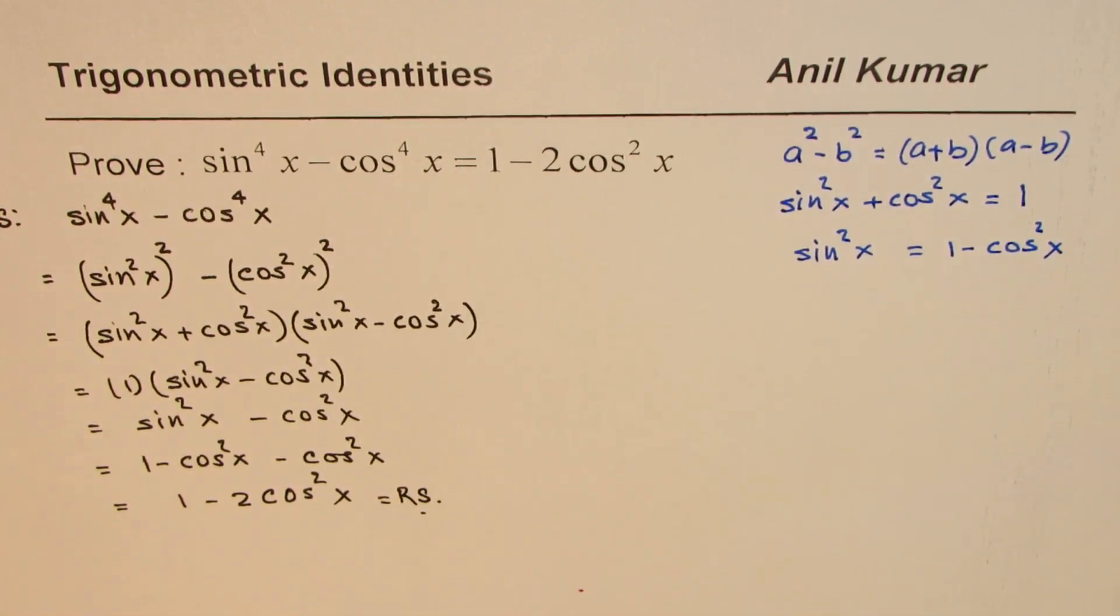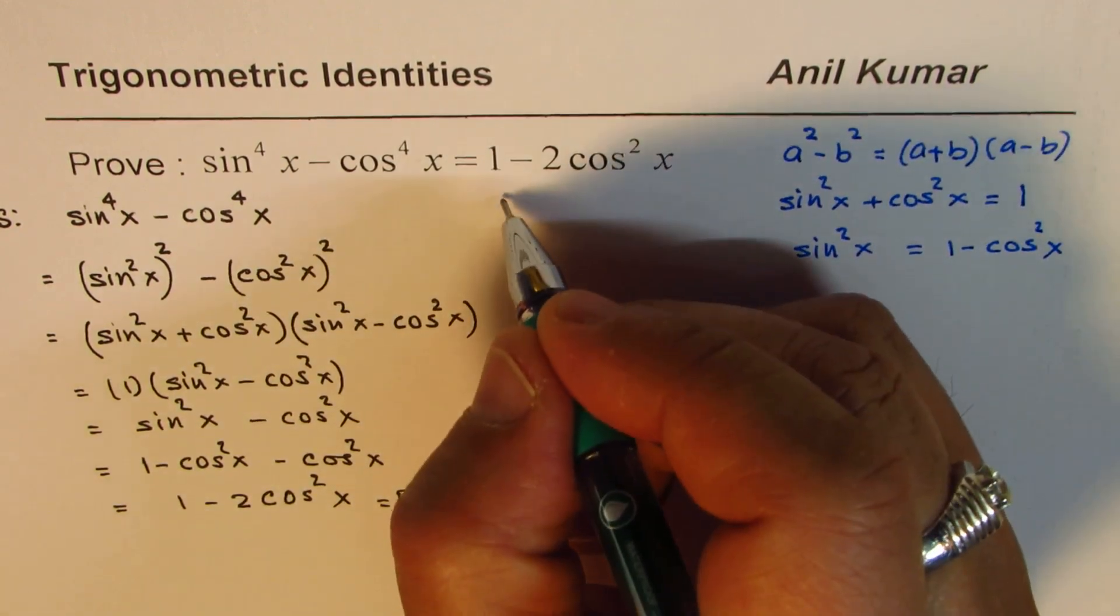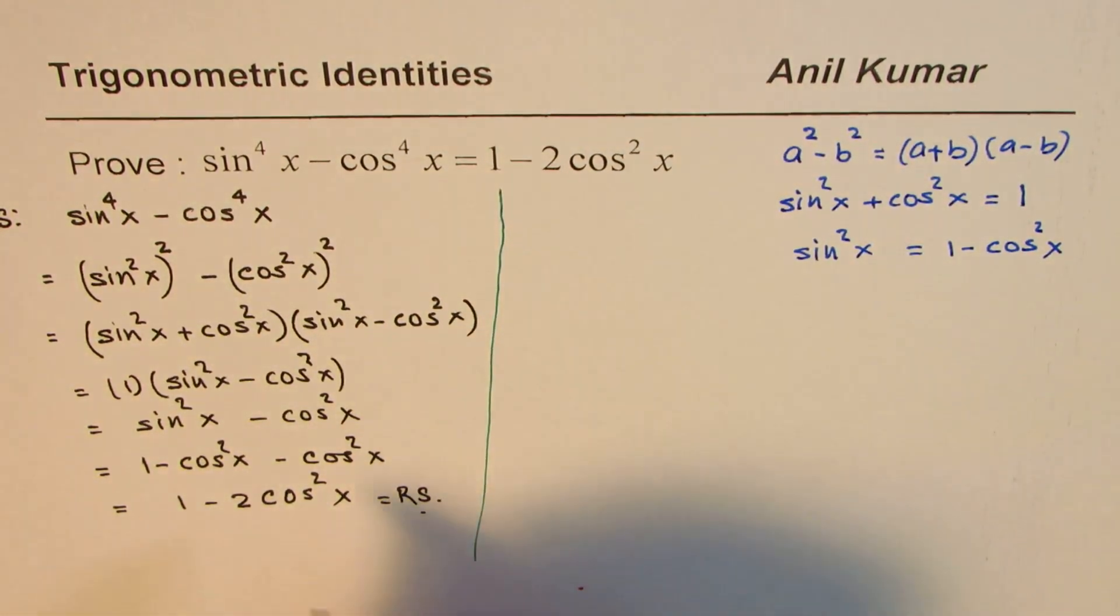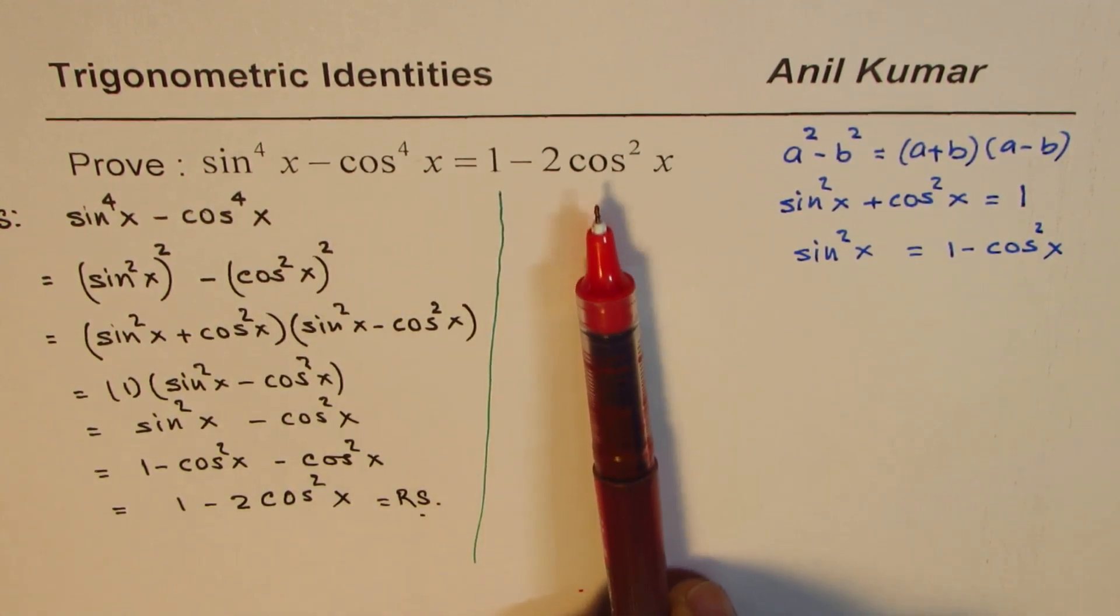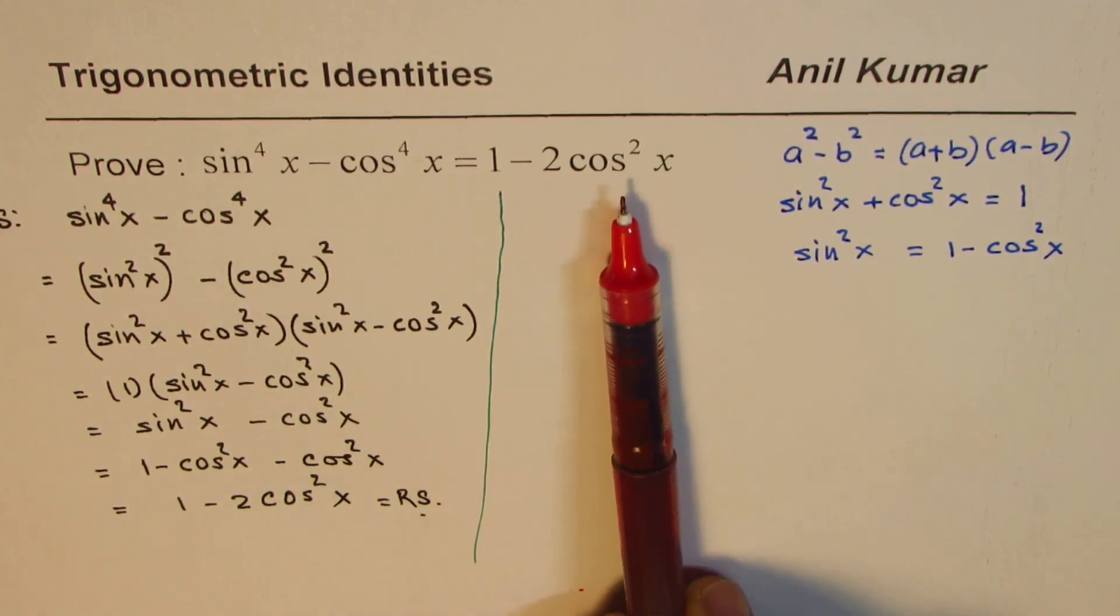So that is how you could actually solve this particular identity starting from the left side. I hope the steps are clear. You can actually also try solving this identity from the right side.